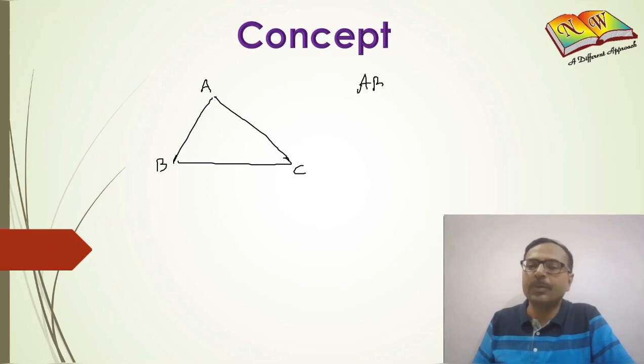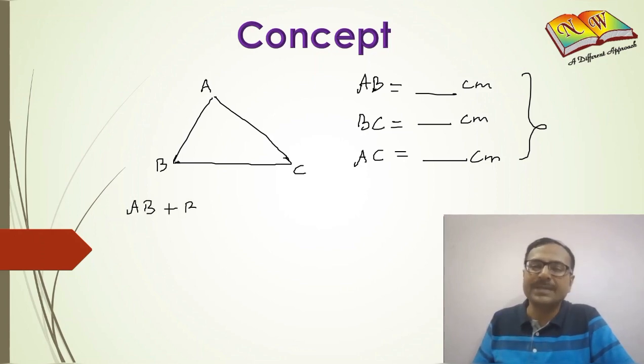So if you measure A to B you get a particular length, and then B to C you again get a particular length, and then A to C you get the third length. And now this triangle has a unique property that if you add AB and BC, this sum will always be greater than the third side AC.